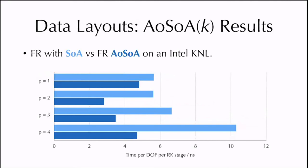To give an example of the benefit, I'm showing PyFR with SOA versus PyFR with AOSOA on the Intel Xeon Phi Knight's Landing KNL. The metric shown is time per degree of freedom per RK stage in nanoseconds, with lower being better, plotted against different polynomial orders. Making this simple change in data layout made a huge impact on performance on this hardware platform, especially at P4 where the time pretty much halves — so our performance doubles just by choosing the right data structure.